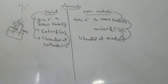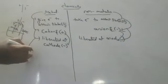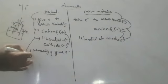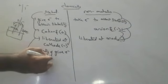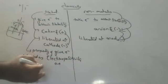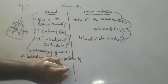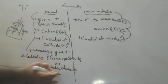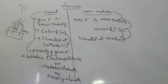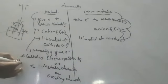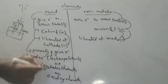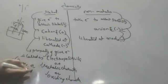The property of giving electrons is called electropositivity. It is also called metallic character. It is also called oxidizing character — because oxidation means losing of electrons. It can also be called basic character, because metals always form bases. So electropositivity, metallic character, oxidizing character, and basic character all mean the same thing: the metal loses electrons.